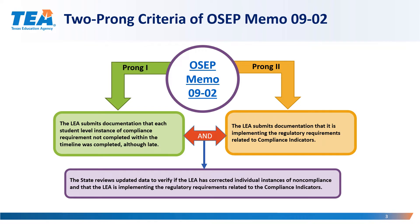Local education agencies are not required to participate in the clarification process, but for LEAs who choose to participate, they must submit documentation for each instance of potential noncompliance using the two-prong criteria of the United States Department of Education's OSEP Memo 0902. For Prong 1, LEAs must submit documentation that each student-level compliance requirement not completed within timeline was completed although late. For Prong 2, LEAs must submit documentation that it is implementing the regulatory requirements related to the compliance indicators. Sufficient documentation must be submitted to satisfy both prongs.